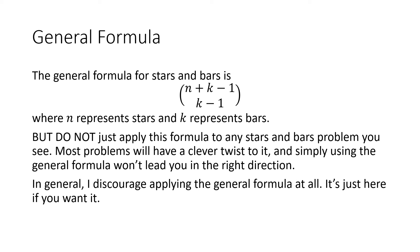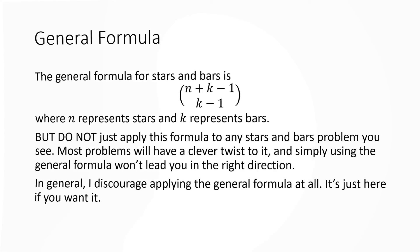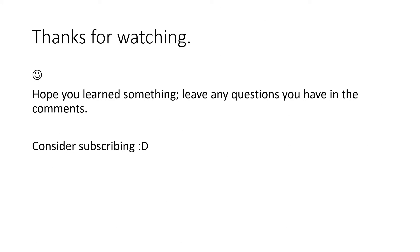There is a general formula for stars and bars, but I wouldn't recommend using it. It's n plus k minus 1 choose k minus 1, where n is the stars and k represents the bars. I wouldn't recommend this because a lot of the time problems have twists that will mess you up. Thank you for watching. If you have any questions, ask in the comments, and goodbye.